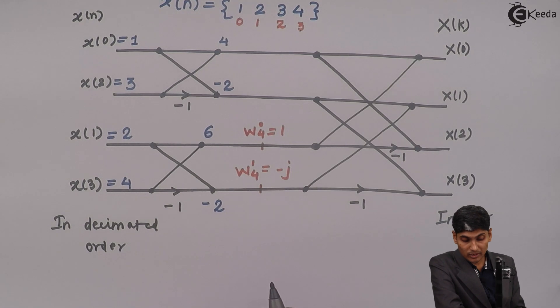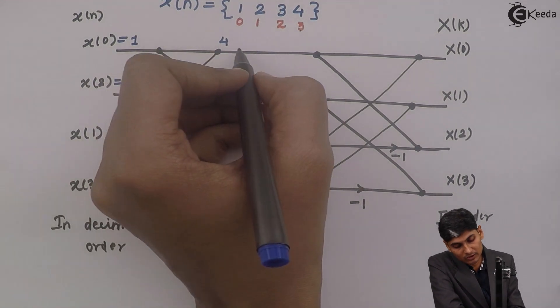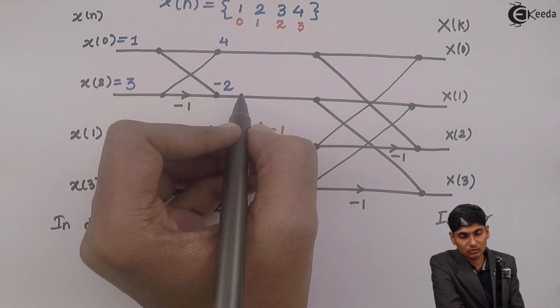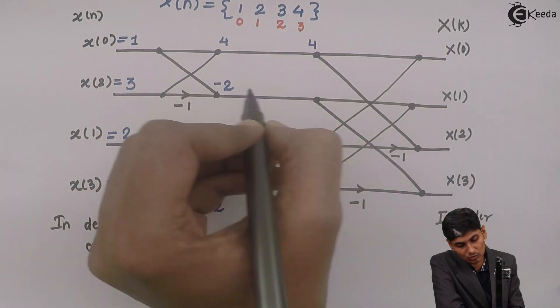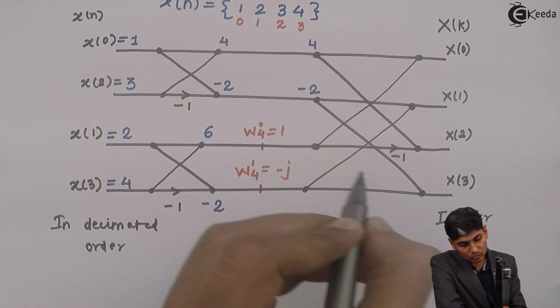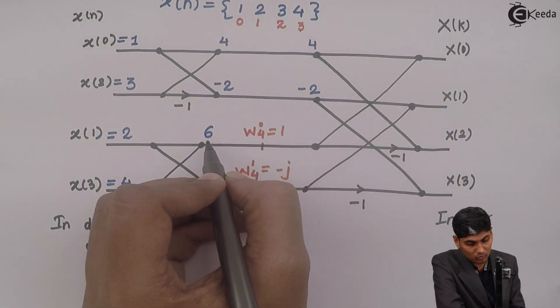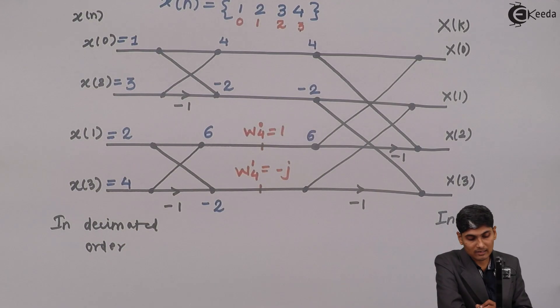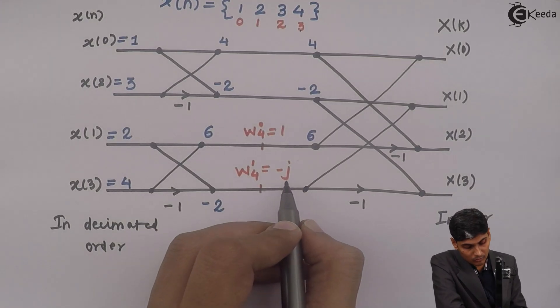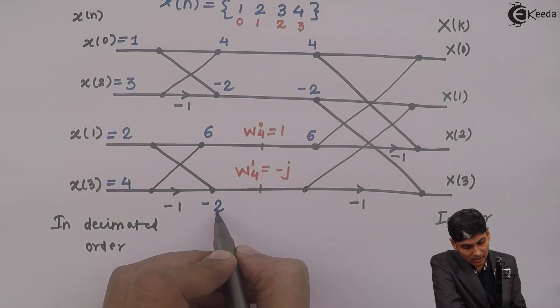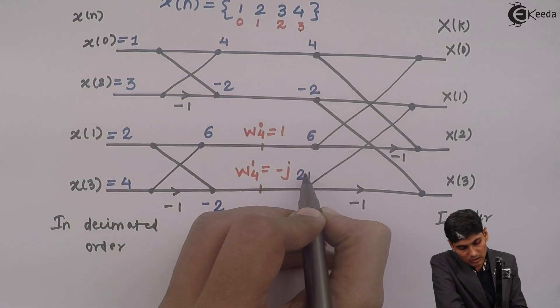Now, we are going to multiply. Here there is no multiplying factor. So I will write 4 at this node, minus 2 at this node. Here, there is a multiplying factor. The multiplying factor is 1. So I use 1 into 6 is 6 back. And here, I am going to multiply minus j with minus 2. I am going to get 2j.